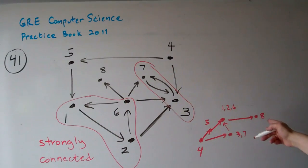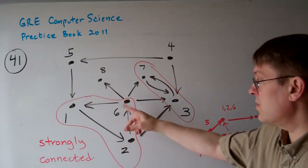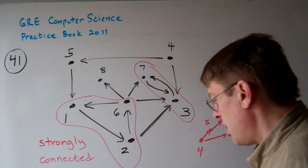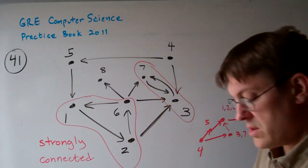And then it goes off to 8 from that cluster 1, 2, 6. Because the only way to get to 8 is through this cluster 1, 2, 6. So that gives us our answer. The answer is A.